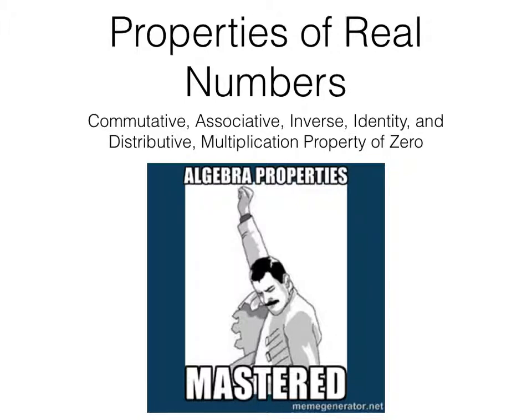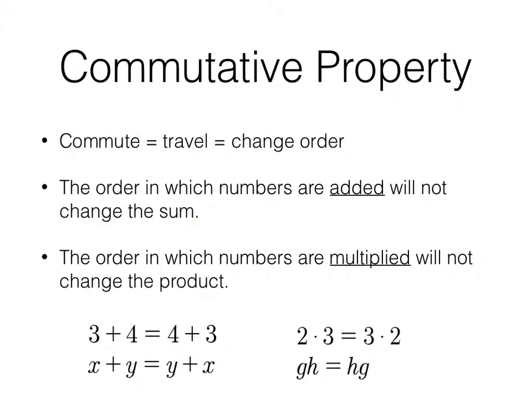So let's get started with the commutative property. The commutative property states that the order in which numbers are added will not change the sum. To commute is to travel. That's like changing the order of where you are. Home to school, school to home. That's kind of what commuting is. It's changing that order of where you go. The travel in between may be in a different order, but you're still in the same two places. So that's one way you can think about the commutative property.